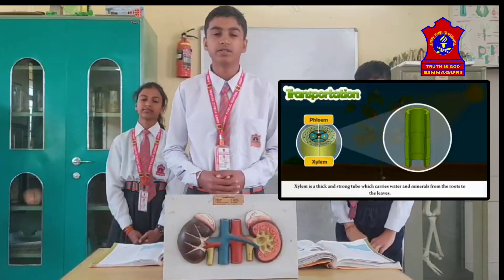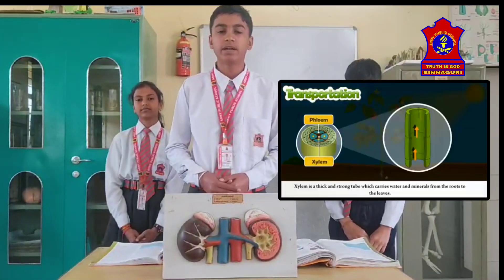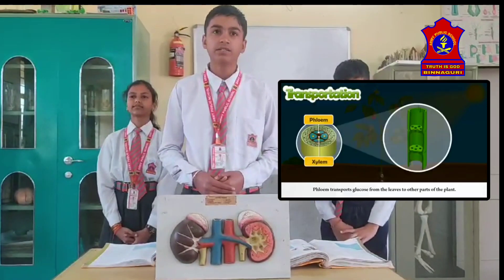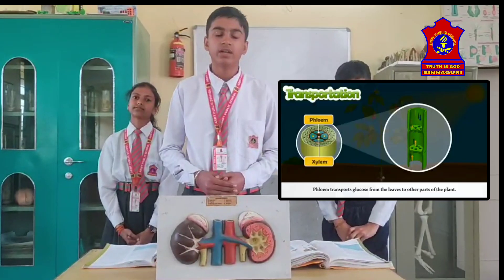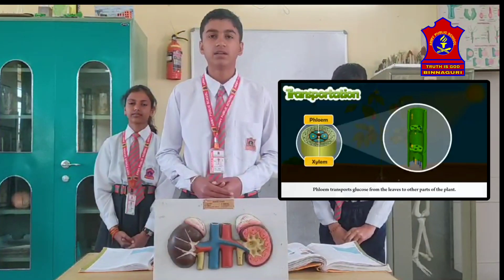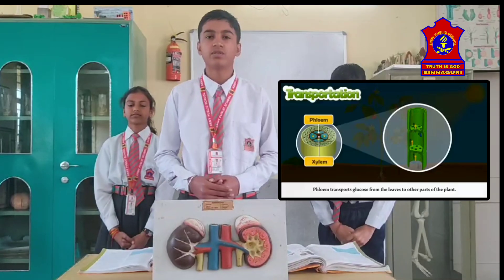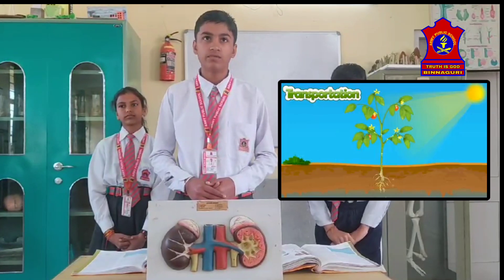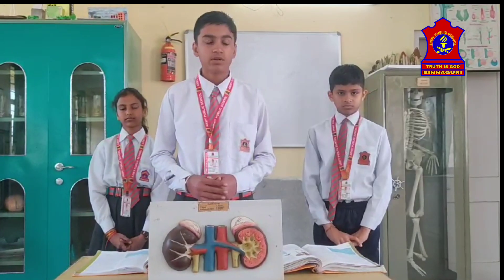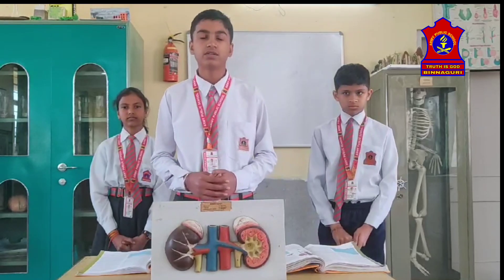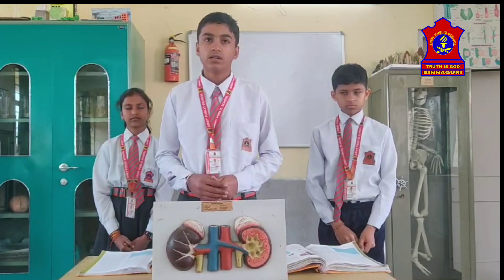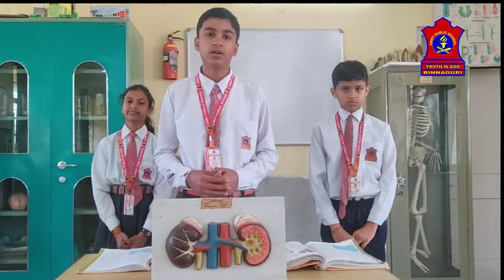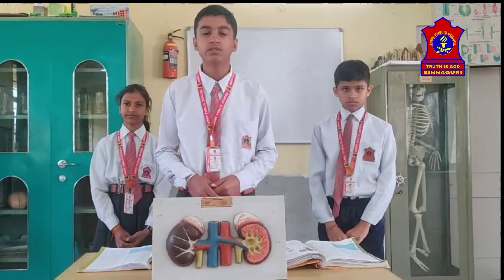Now let's move to transpiration. In class 6, you learned that plants release water through the process of transpiration. Plants take minerals, nutrients, and water from the soil, but not all the absorbed water is used. The excess water evaporates through stomata present on the surface of leaves. This process of evaporation is called transpiration. It generates a suction pull that helps in drawing water up to great heights in tall plants, and also helps cool the plants.